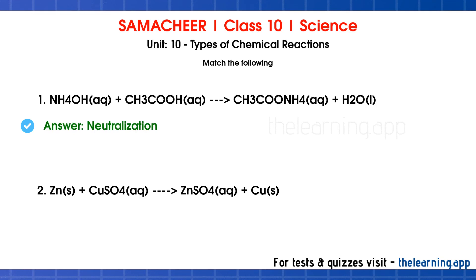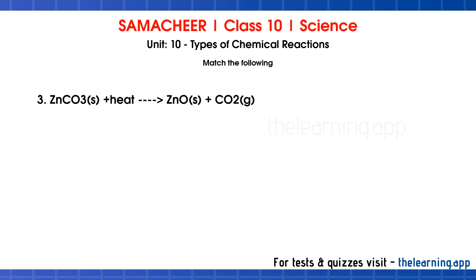Second: Zinc plus copper sulfate gives zinc sulfate plus copper. This is a single displacement reaction. Zinc displaces copper from copper sulfate, combining with SO4 to form zinc sulfate. This is single displacement. Third: Zinc carbonate plus heat gives zinc oxide plus carbon dioxide. Heat is the energy factor, so this is a thermal decomposition reaction.